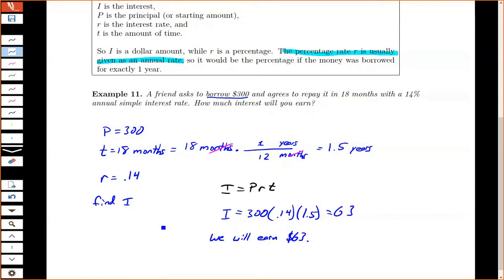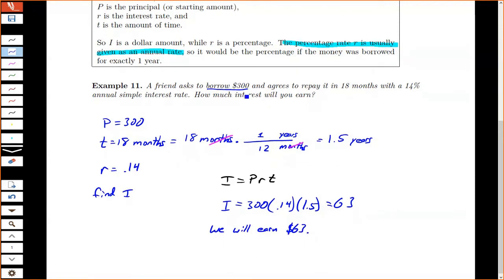I want to expand on this problem a little bit. I want to ask another question that wasn't part of the original question. How much does your friend have to repay? So they have to repay what they borrowed and also the interest. So the amount that they have to repay is going to be P plus I. So 300 plus the 63, which is $363.